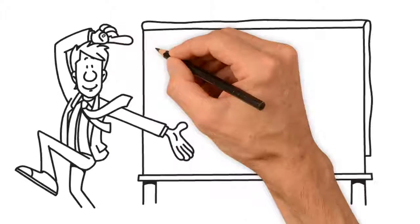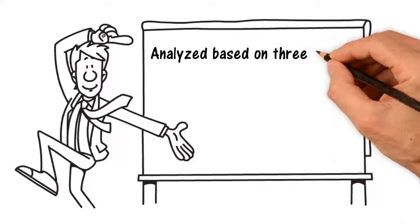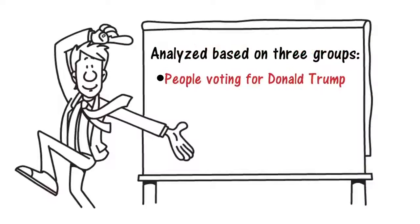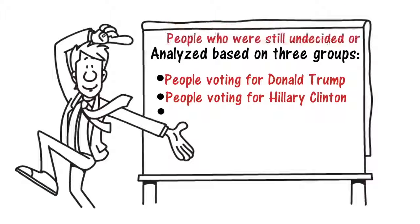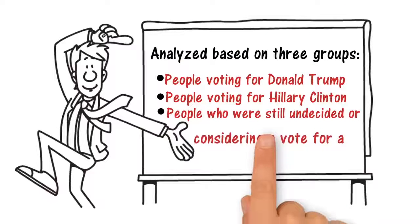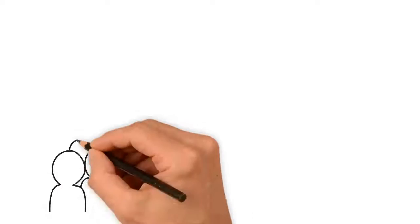Voters' attitudes were analyzed based on three groups: people voting for Donald Trump, people voting for Hillary Clinton, and people who were still undecided or considering a vote for a third-party candidate.